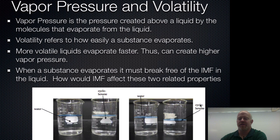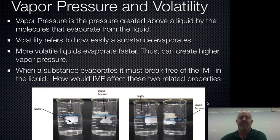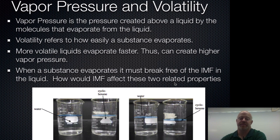Something called cyclohexane is a nonpolar substance. Even though it has six carbons, making it a much heavier molecule than water, it has only London dispersion forces, so the forces holding it together are much, much weaker. Because those forces are weaker, it's going to evaporate faster.